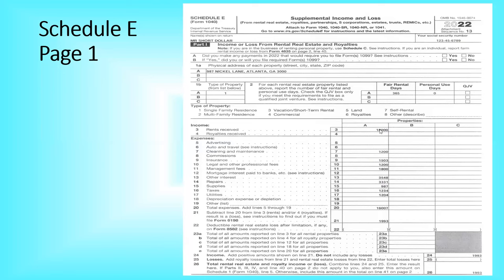You can see we had $18,000 in rent received for the year. On line 20, these are the total rent expenses that we had — $16,007, the total of all those particular expenses. And that gives us a net profit of $1,993. That number goes right here to income — $1,993 on line seven.